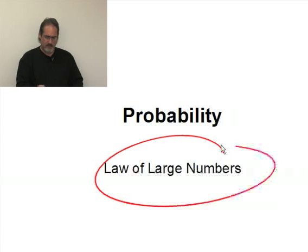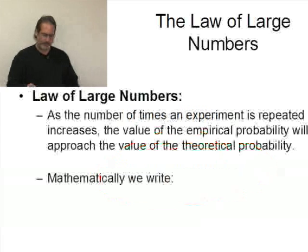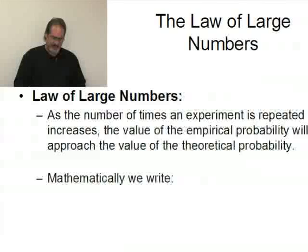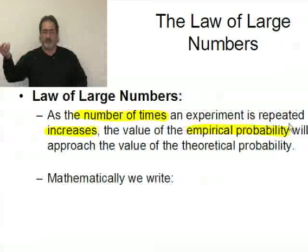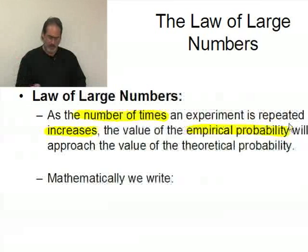Let's take a look now at the idea of the law of large numbers. The law of large numbers simply says that as the number of times an experiment is repeated, like tossing a coin, increases as you toss that coin more and more, the value of the empirical probability—remember the empirical probability is what you get from the experiment when you actually do an experiment—will approach the value of the theoretical. And if we recall, the theoretical probability is the true probability.